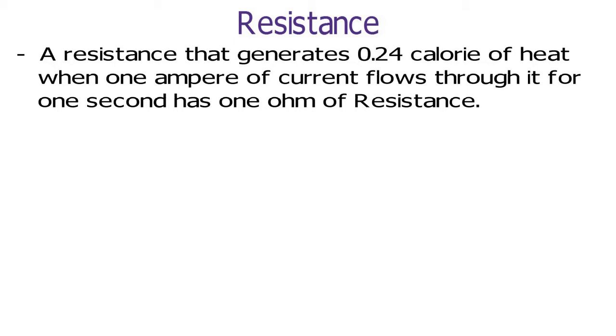A resistance that generates 0.24 calorie of heat when 1 ampere of current flows through it for 1 second has 1 Ohm of resistance.